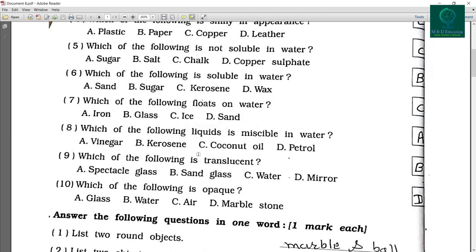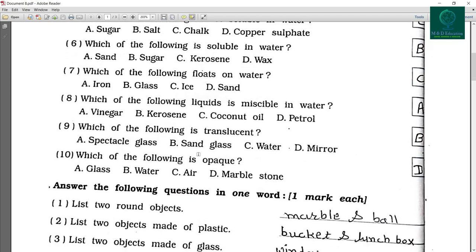Which of the following liquids is miscible in water? So it's vinegar. Which of the following is translucent? So answer is sand glass.